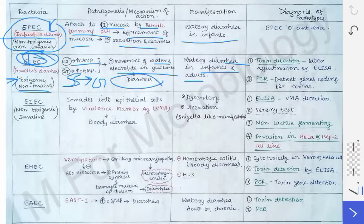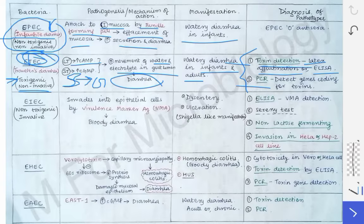For diagnosis of the ETEC pathotype, after the general E. coli diagnosis, you need to detect the toxins — heat-labile toxin and heat-stable toxin. These can be detected by latex agglutination test or by ELISA. You can also diagnose this pathotype by PCR, detecting the genes producing these toxins, which are present only in the enterotoxigenic pathotype of E. coli.